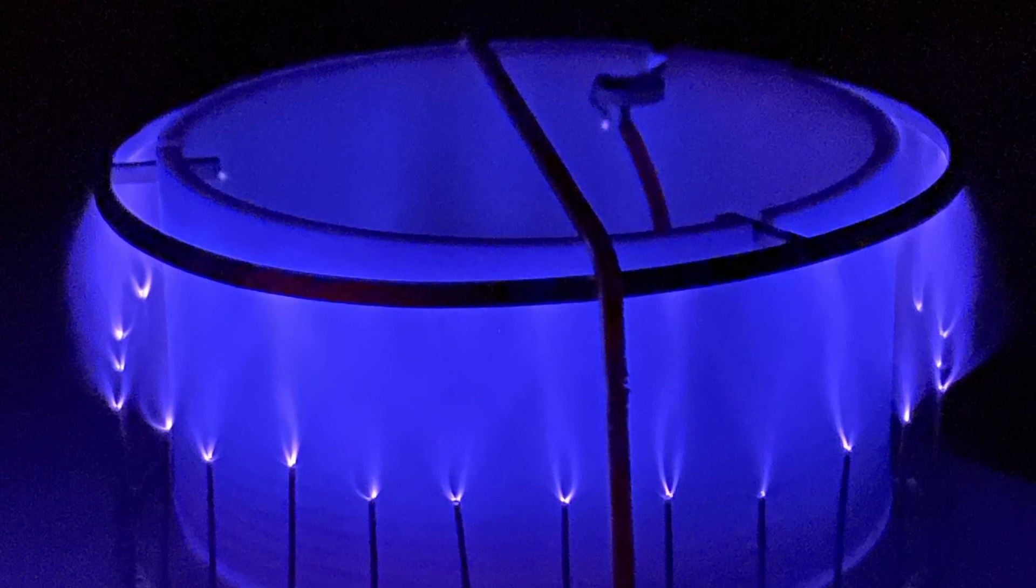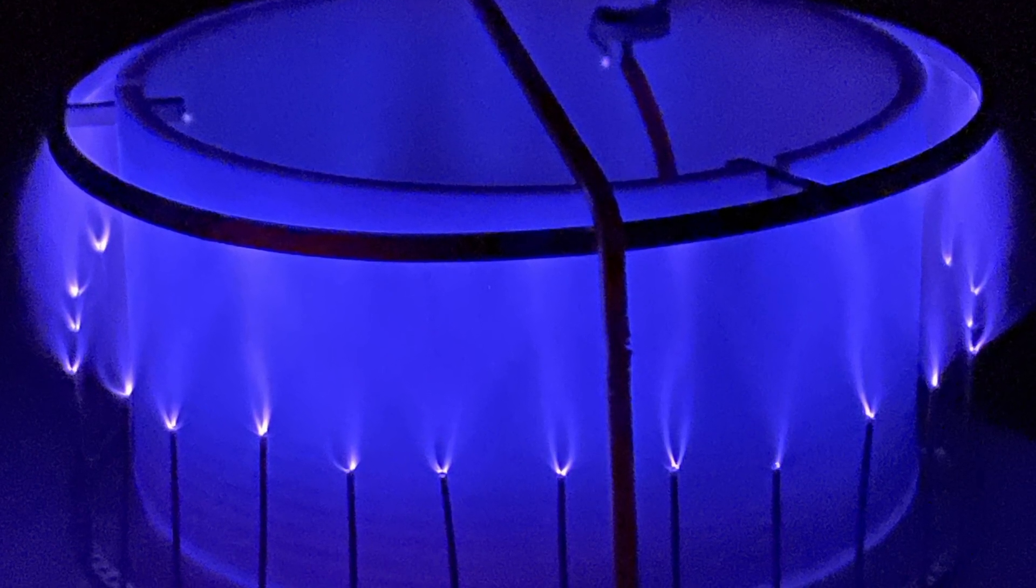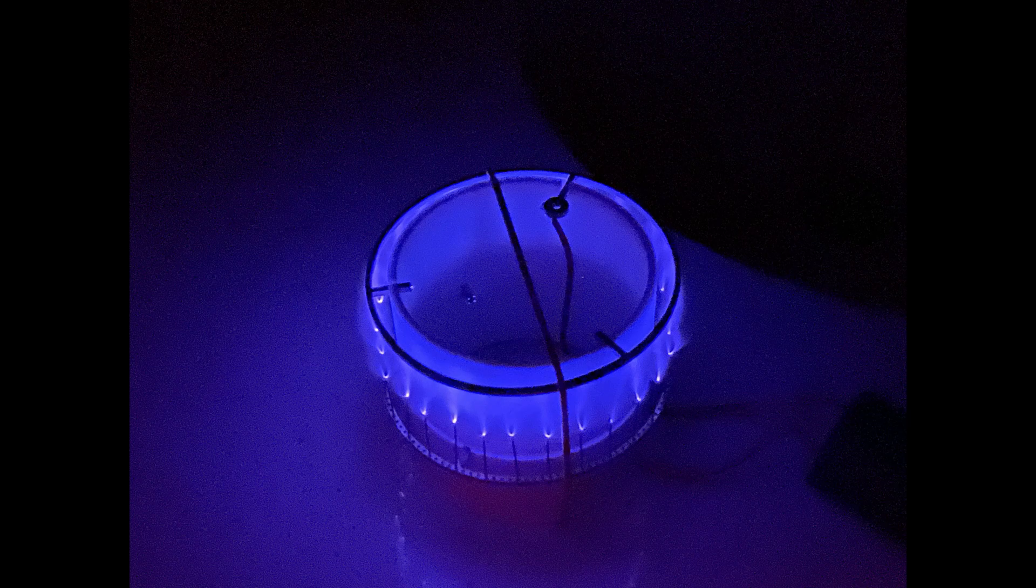The general idea is to expose two electrodes to a high voltage source. This causes what's known as corona discharge on the anode. The air in the region around the electrode surface ionizes and experiences Lorentz force in the direction of the electric field.